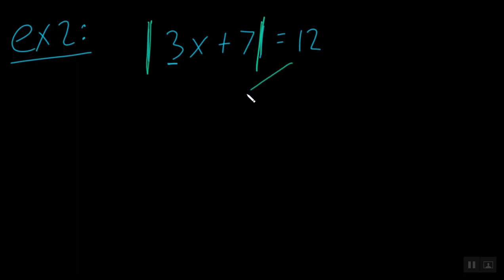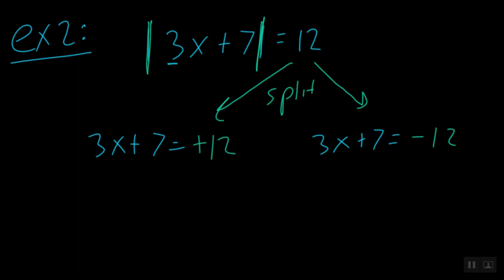So at this point, what we can do is go ahead and do our split. We'll split this positive 12 into both its positive version and its negative version. And then we're going to set this 3x plus 7 equal to the positive and 3x plus 7 equal to the negative version.